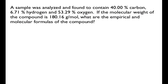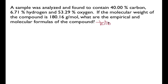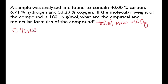This is just like we did previously with the mass data, except here we've been given the percent data. There's one little trick you need to remember that will help you out a lot: since we're given the percent data, we can just assume that our sample has a total mass of 100 grams. So if our sample is 100 grams and 40% of it is carbon, then we have 40 grams of carbon.